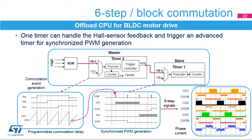This slide presents how the brake function sources are managed. Multiple brake sources can be combined for triggering a brake event. A system-level source can be selected, the clock security system or CSS, indicating an external clock failure. Brake inputs can also be selected with the alternate function controller on the MCU pinout. External sources can be conditioned before entering the brake detection unit, allowing selection of proper polarity and discarding of spurious glitches by means of a digital filter.